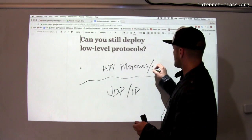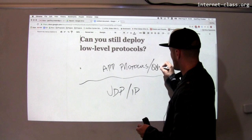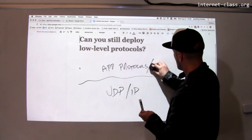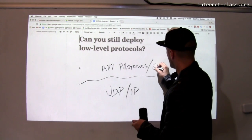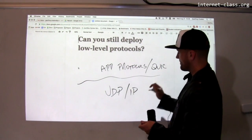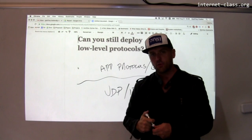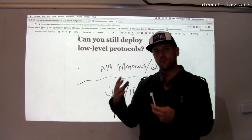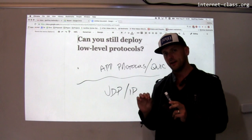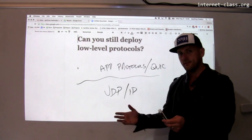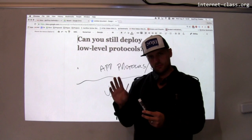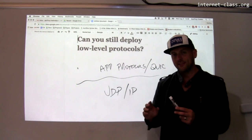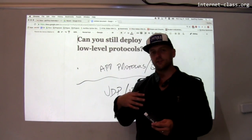QUIC is an application-level protocol built on top of UDP — spelled Q-U-I-C. QUIC is a protocol developed at Google, designed to experiment with new ways to provide some of the features that TCP provides without using TCP. What's interesting is that Google controls, in many cases, both sides of a lot of connections online.